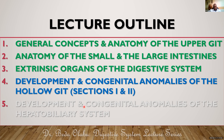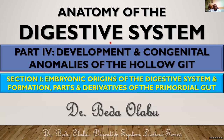The fifth part will focus on the hepatobiliary system. In this first part, I'm going to focus on the embryonic origins of the digestive system and the formation, parts, and derivatives of the primordial gut. In the second section, we will look at the specific organs which constitute the holo-GIT and how they develop.